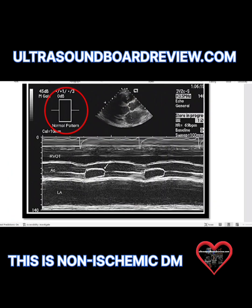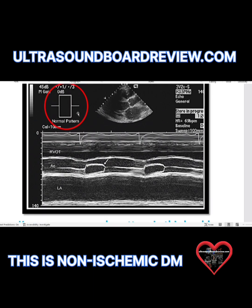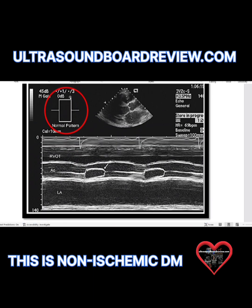Here's another M-mode that suggests dilated cardiomyopathy as well as decreased stroke volume. In a normal M-mode of the aortic valve it should open here and then close — a clear box shape. But look at this one: it opens here and then just gradually decreases and then closes. That gradual closure suggests that the stroke volume has decreased.